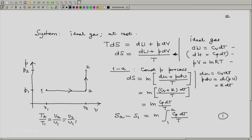In a similar fashion, look at the states 2 and A, they are at the same volume, constant volume line and hence we will have T2 by TA equal to P2 by PA but since PA equals P1, we can write this as P2 by P1.